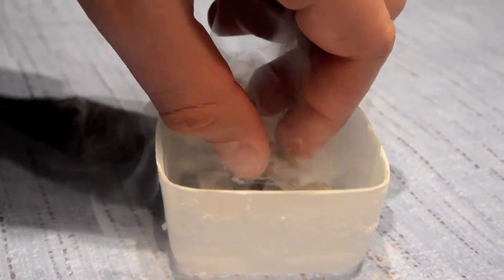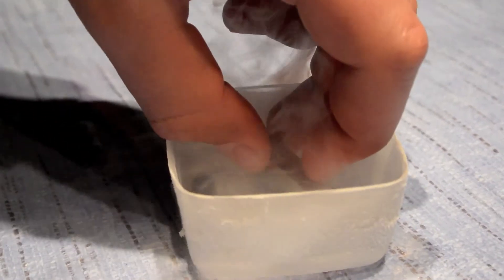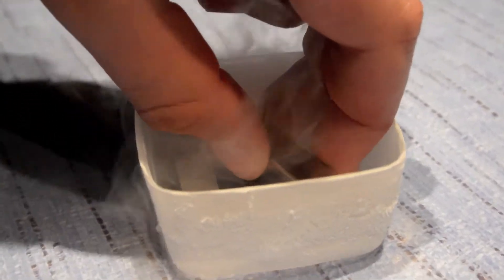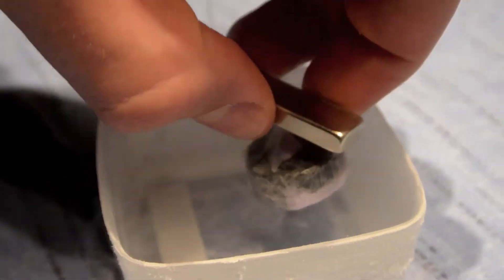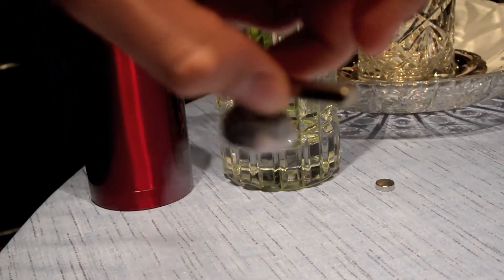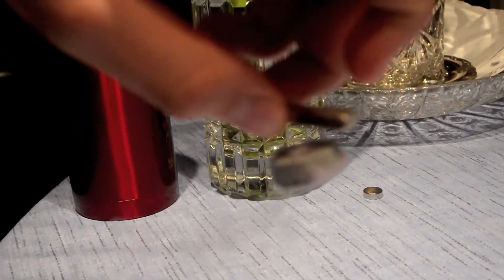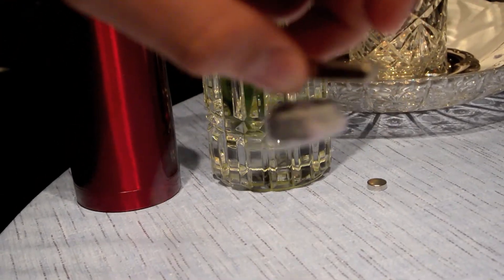The reason I am dipping it into the liquid nitrogen at regular intervals is to keep it cool. If it heats up again, then it will lose its superconductivity. This is also why I have wrapped it in cellophane to keep it cool.